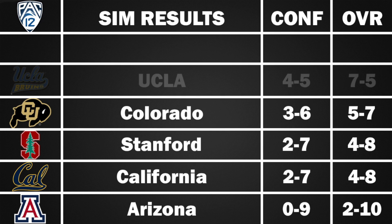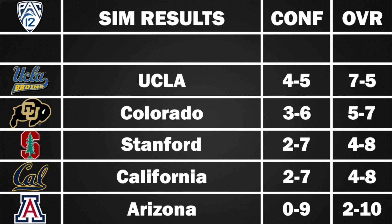UCLA goes 7-5, 4-5 in the Pac-12 — not a great year but not horrible. The Bruins beat Coastal Carolina, San Diego State, North Carolina Central, Utah, Stanford, Colorado, and Arizona. Losses came to Washington State, Oregon State, Arizona State, USC, and Cal.